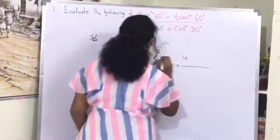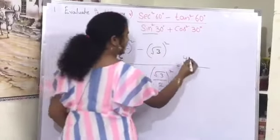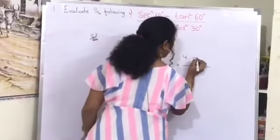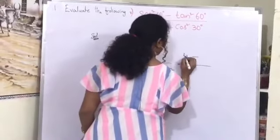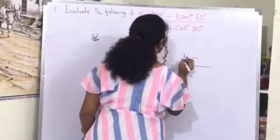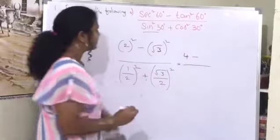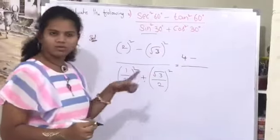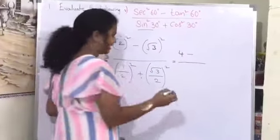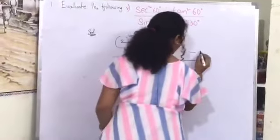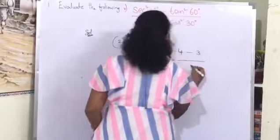Simplifying the numerator: 2 squared equals 4, minus root 3 squared, where root 3 into root 3 gives 3, so we get 4 minus 3 equals 1.